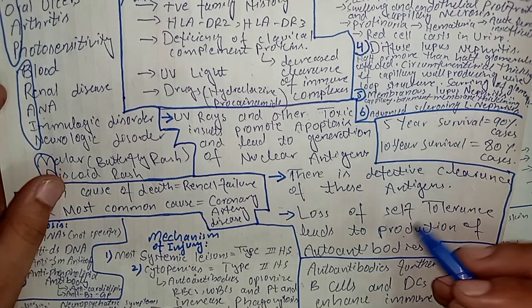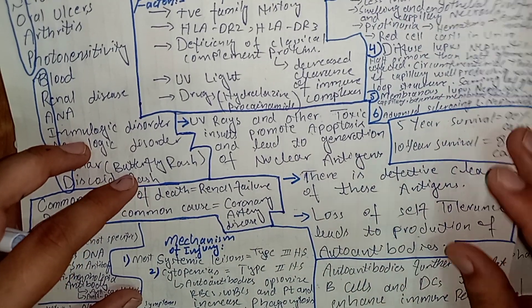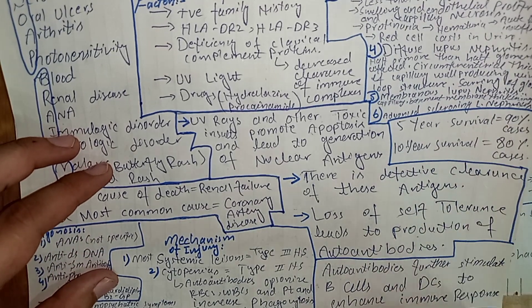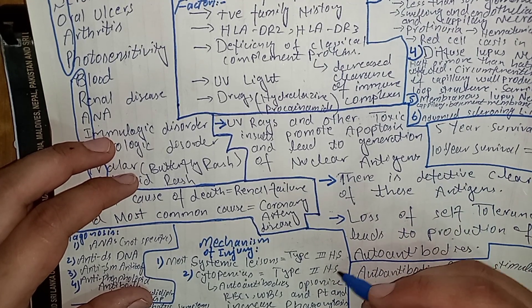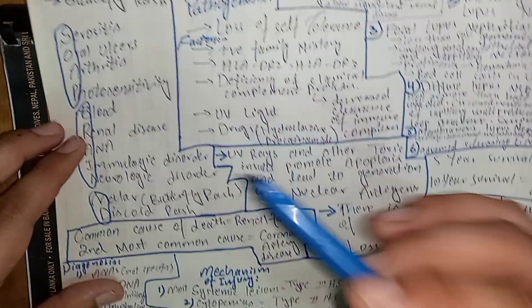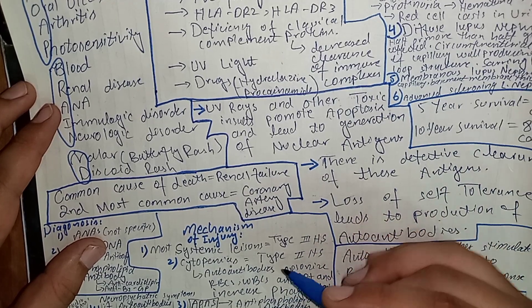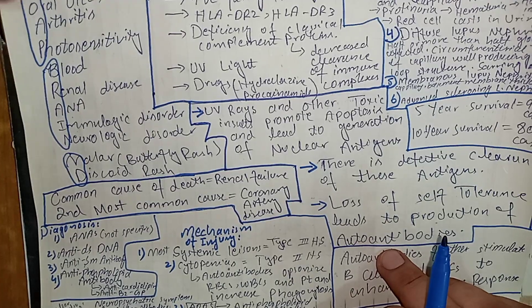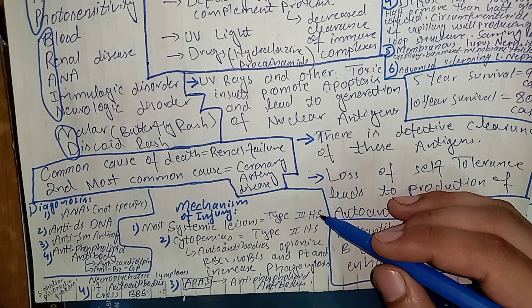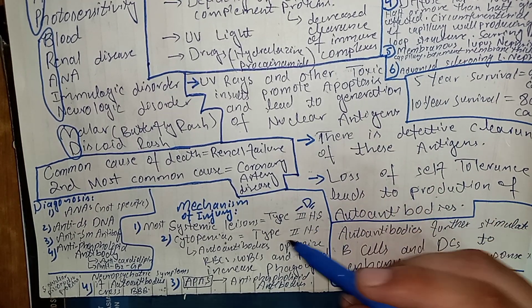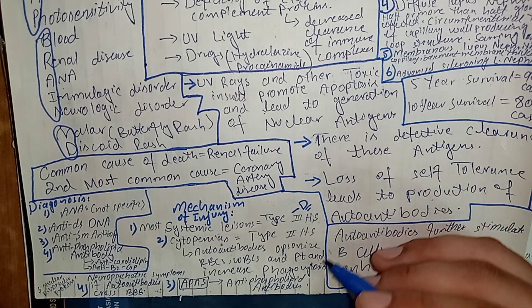Autoantibodies bind to their respective antigens, forming antigen-antibody complexes which deposit in multiple tissues, causing systemic manifestations. Most systemic lesions are due to type 3 hypersensitivity, mediated by immune complexes. However, blood manifestations — cytopenias including decreased RBC, WBC, and platelet counts — are due to type 2 hypersensitivity, where autoantibodies bind to cell surfaces and increase phagocytosis. So SLE is a mixture of type 2 and type 3 hypersensitivity, with type 3 being dominant.